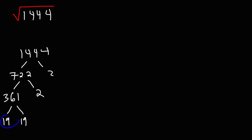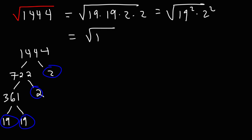So now what we need to do is collect what we have here. So 1,444 is equal to 19 times 19 times 2 times 2, which we can write as 19 squared times 2 squared. And then we could break the single radical into two separate radicals. Now the square root of 19 squared is simply 19. And the square root of 2 squared is 2. So the answer is going to be 19 times 2, which is equal to 38.